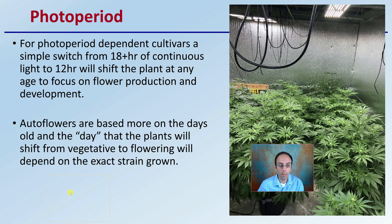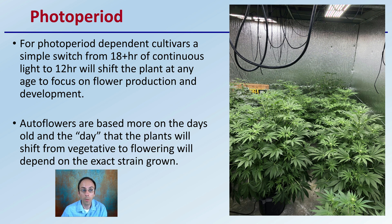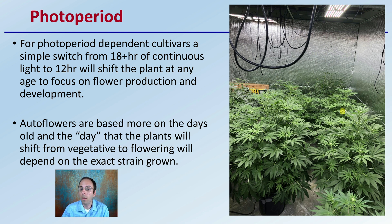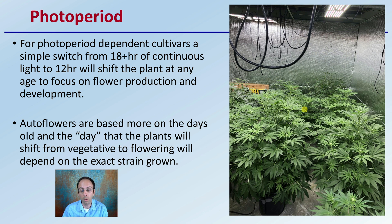Now the photoperiod itself. For photoperiod dependent cultivars, a simple switch from 18 or more hours of continuous light to 12 hours of continuous light will shift the plant at any age to focus on flower production and development. Autoflowers are based on days old, and the day that the plants will shift from vegetative to flowering will depend on the exact strain grown. With photoperiod dependent plants, you have the option — you could do it when they're really small or really tall. Once exposed to 12 hours, the plant will produce those flowers. As growers, we need to be mindful of how our plants look to maximize efficiency.